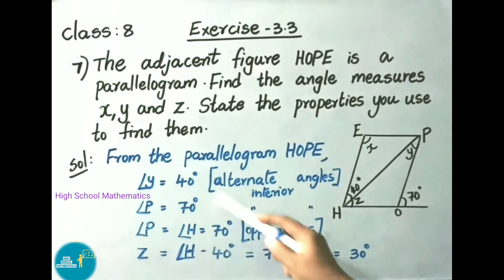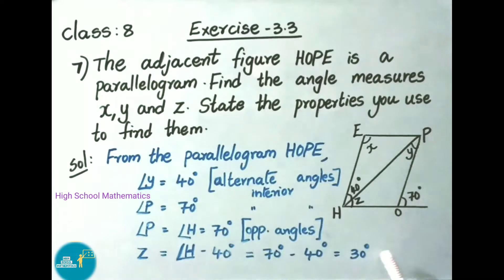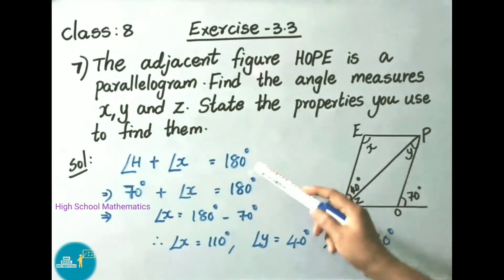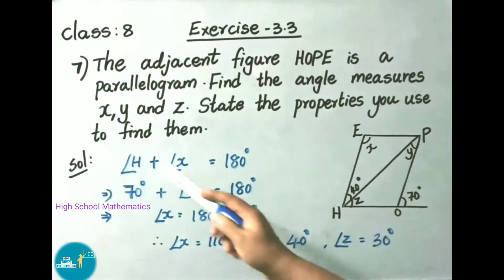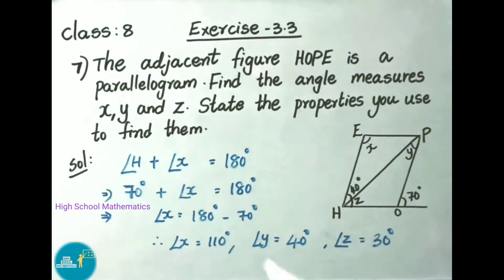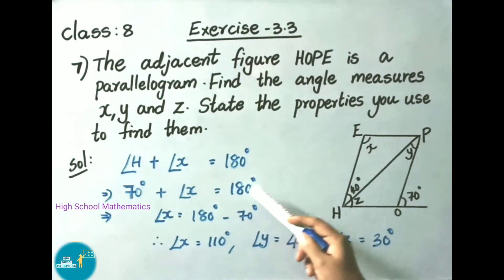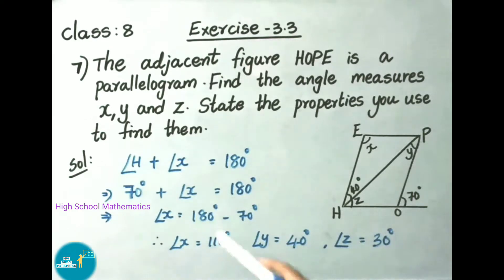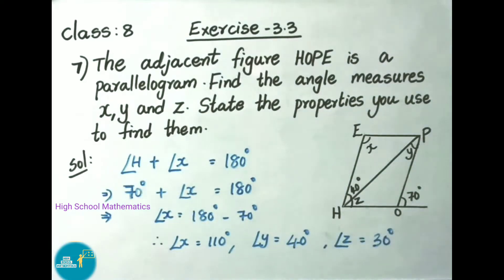So we got angle y equals to 40 degrees and angle z equals to 30 degrees. Now let us find angle x. Angle H plus angle x equals 180 degrees. Why? Because the sum of adjacent angles of a parallelogram is equal to 180 degrees. So 70 plus x equals 180, therefore x equals 180 minus 70, which is 110 degrees.